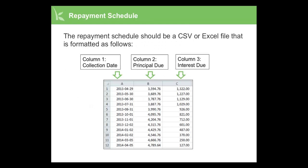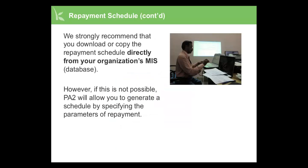The repayment schedule should be a CSV or Excel file formatted as follows: In column 1, Collection Date. In column 2, Principal Due. In column 3, Interest Due. We strongly recommend that you download or copy the repayment schedule directly from your organization's MIS or your database. However, if this is not possible, PA2 will allow you to generate a schedule by specifying the parameters of a repayment.